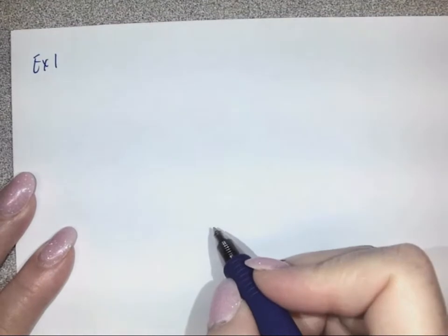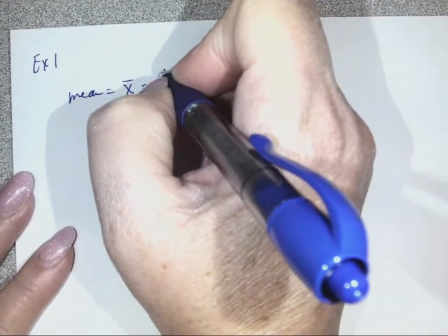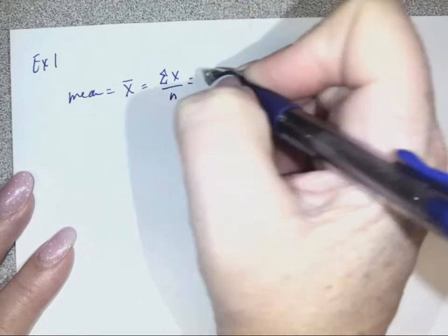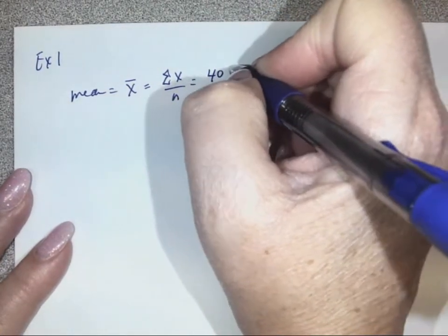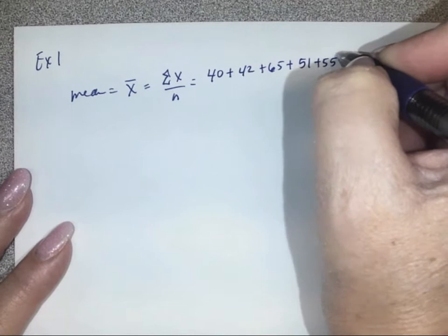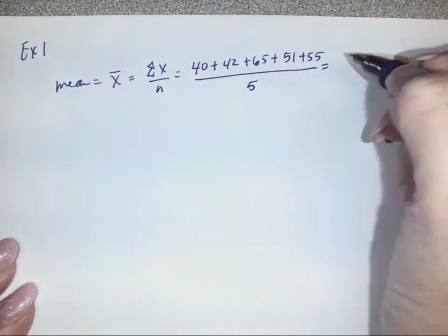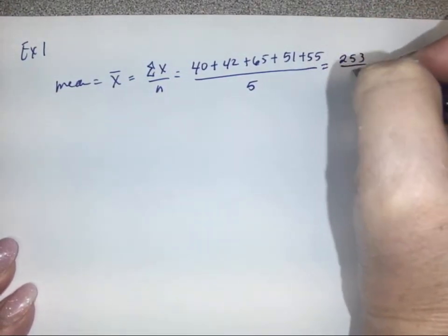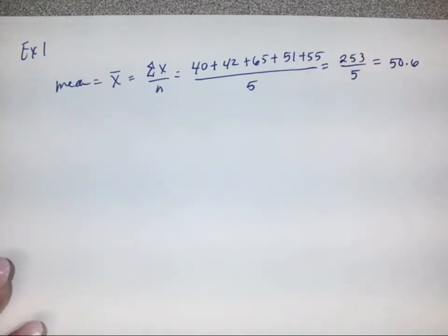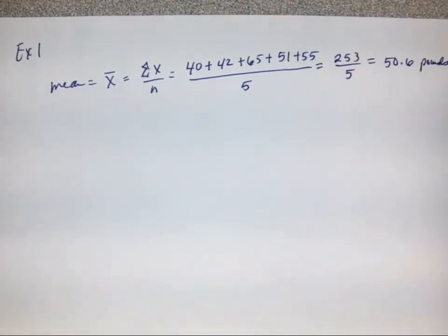We're going to go to example one. Our mean equals x bar, which is the summation of our x values over n. We were given the values of 40, 42, 65, 51, and 55. Those were the pounds of garbage that they found at the five stations. We'll add up the top and get 253 divided by five, we get 50.6.